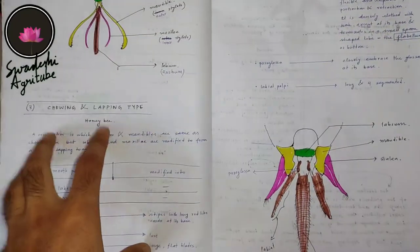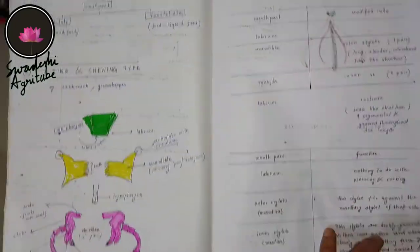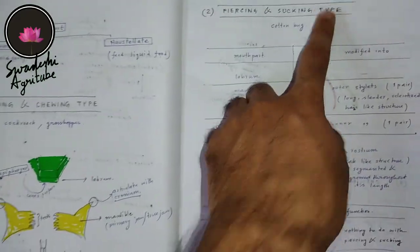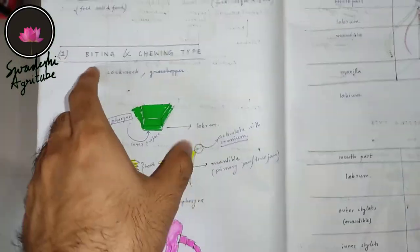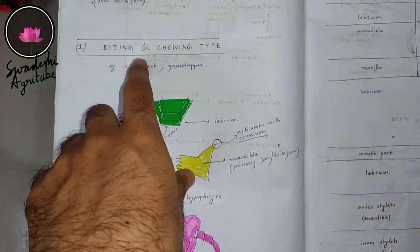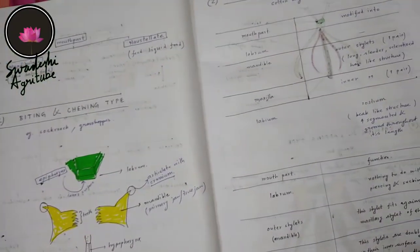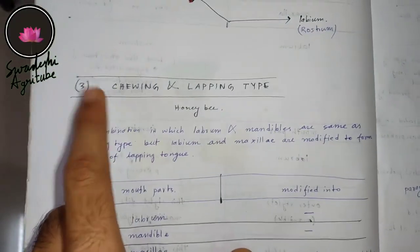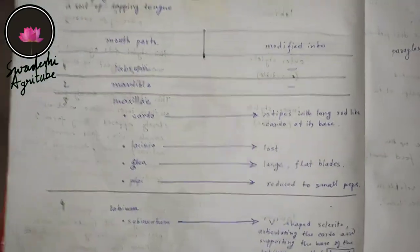In this modification of mouth parts series, in the previous video I mentioned the modification of piercing and sucking type of mouth parts, and how you can easily remember this modification if you remember biting and chewing type of mouth parts. In this video I am going to talk about the modification of mouth parts in chewing and lapping type.